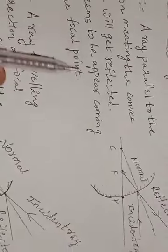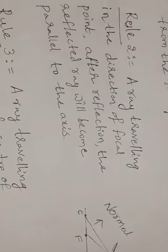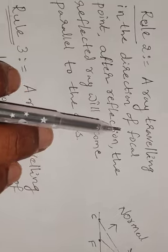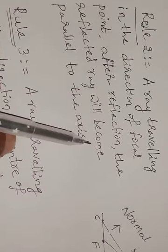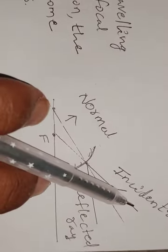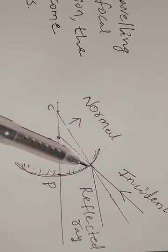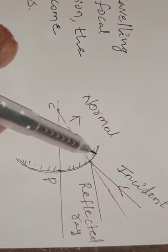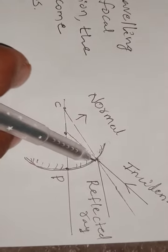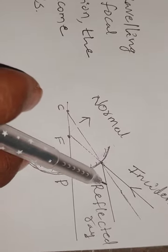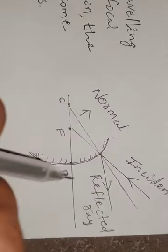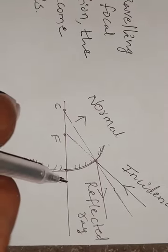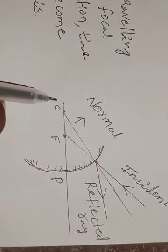Now we discuss Rule 2. A ray traveling in the direction of the focal point, after reflection, the reflected ray becomes parallel to the principal axis. Here, the incident ray appears to pass through the focal point and is incident on the convex surface. After reflection, the reflected ray moves parallel to the principal axis. We draw a normal, and this normal meets the center of curvature.